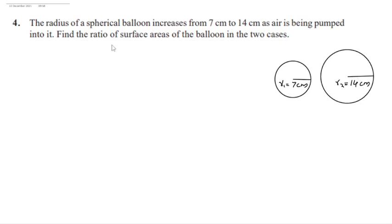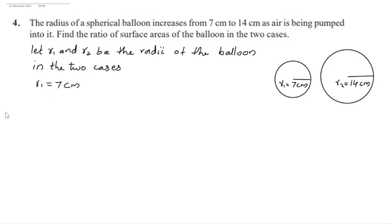Here we have to find the ratio of surface areas of the balloon in the two cases. Let's take the radii of the balloon in these two cases as R1 and R2. R1 is 7 cm. R2 is 14 cm.